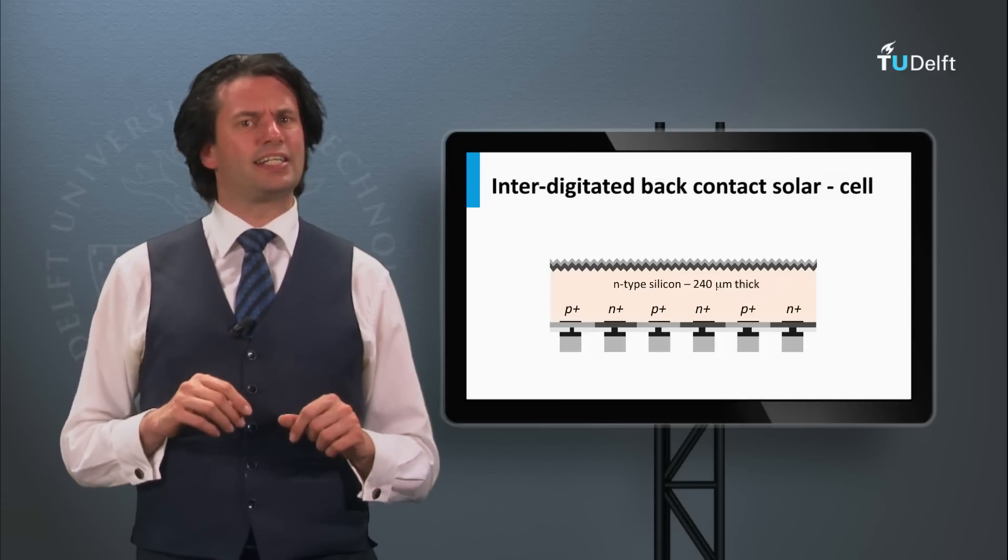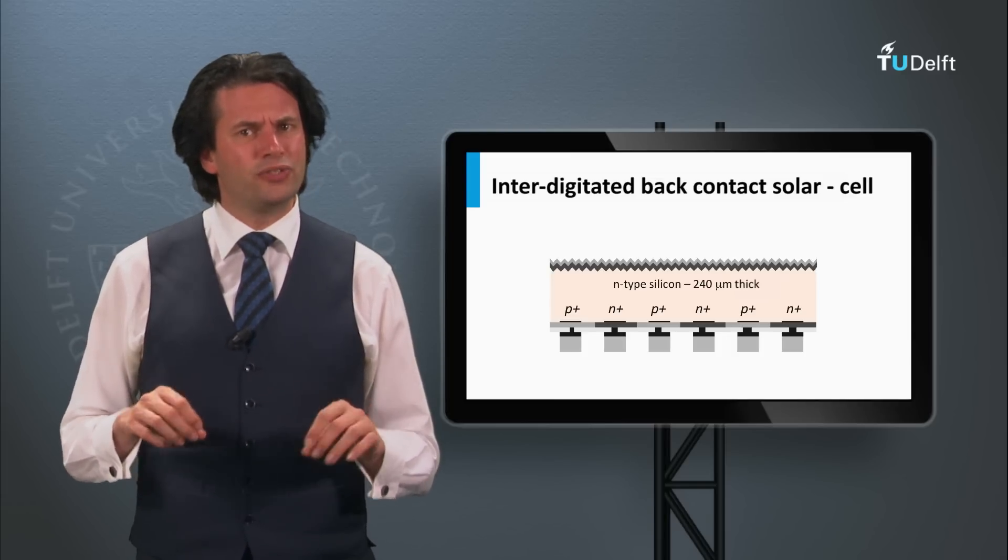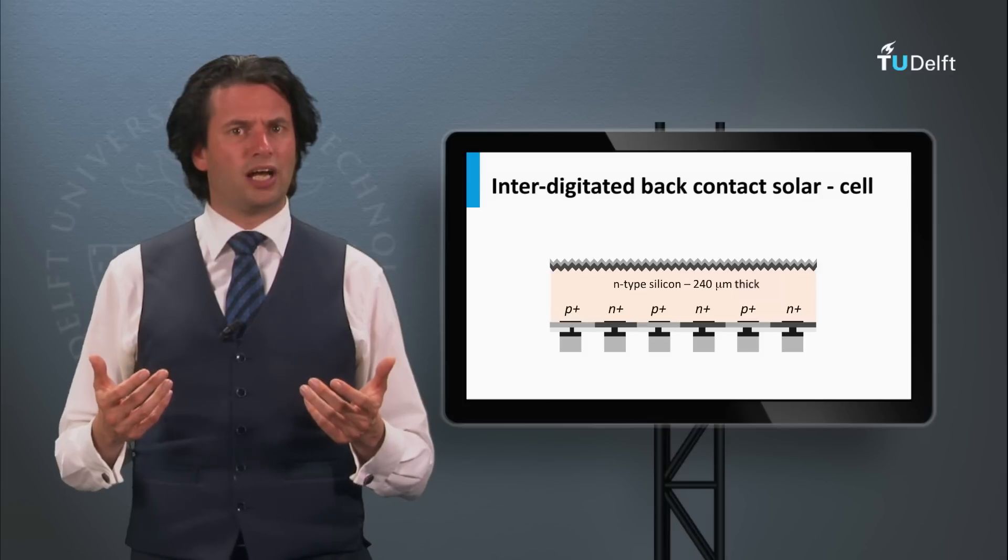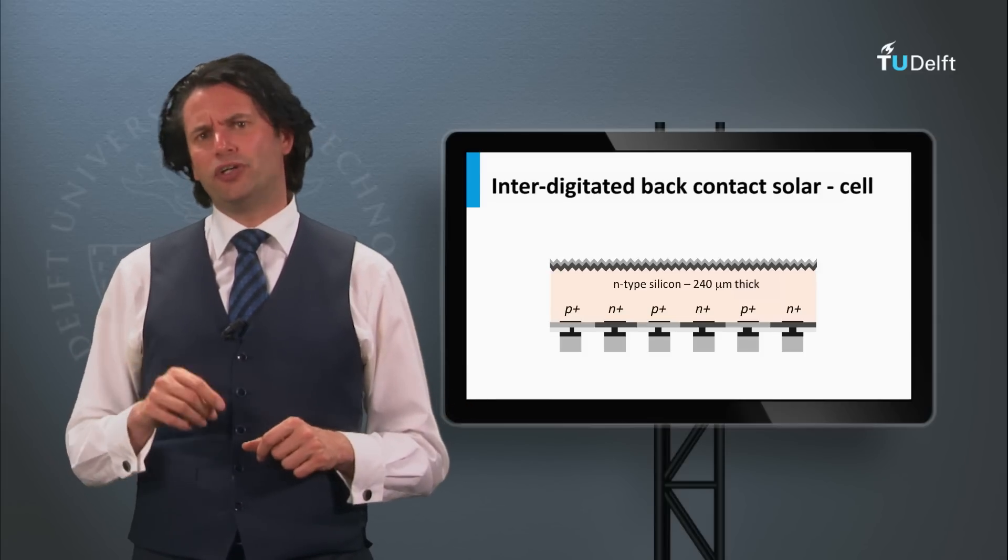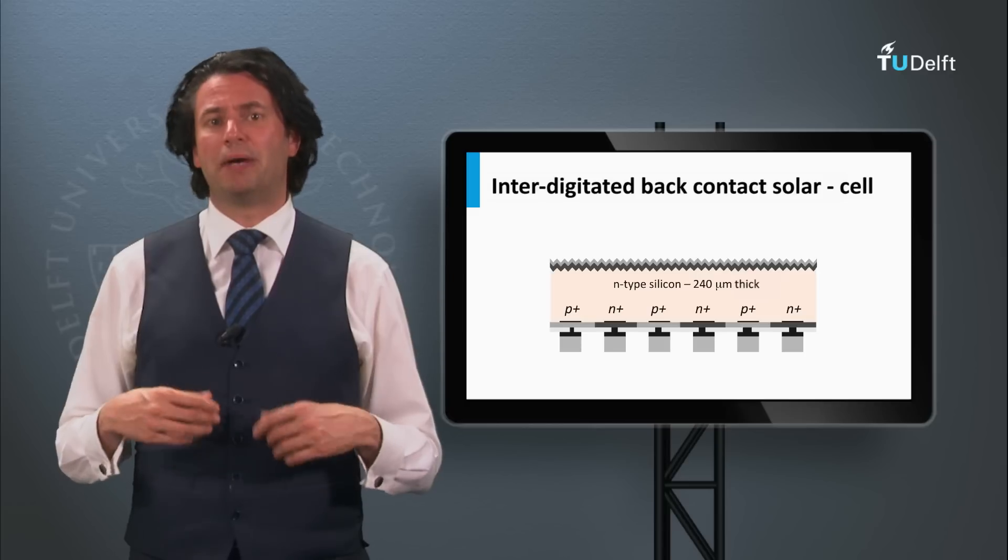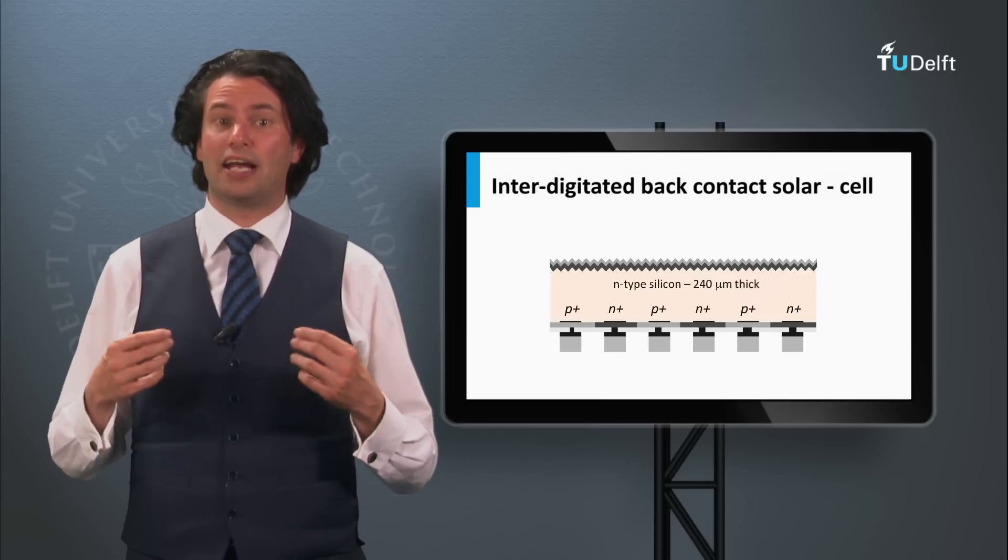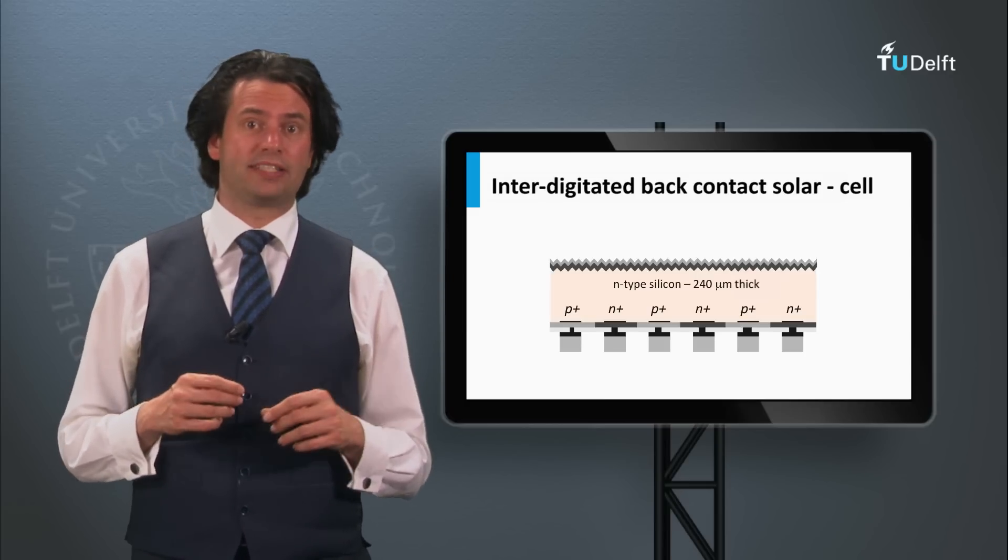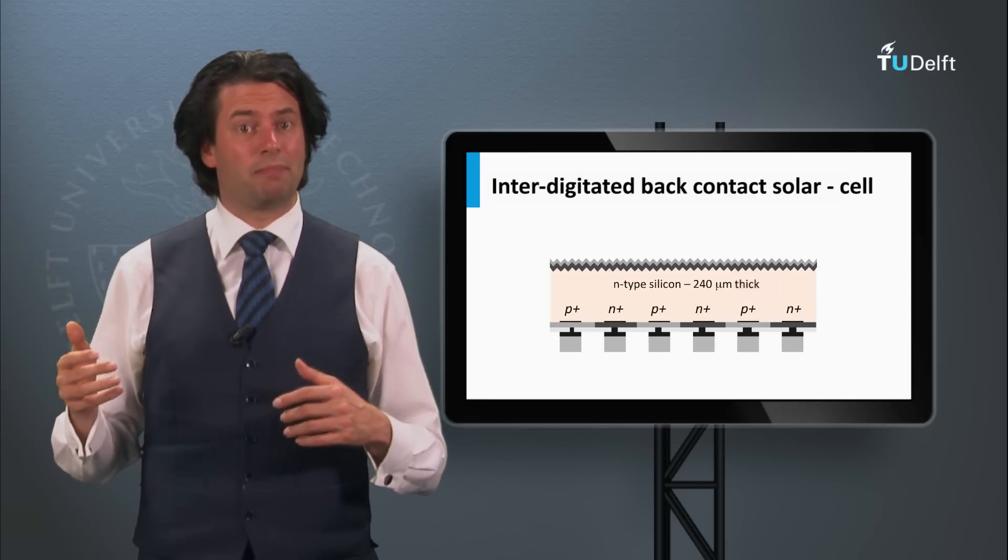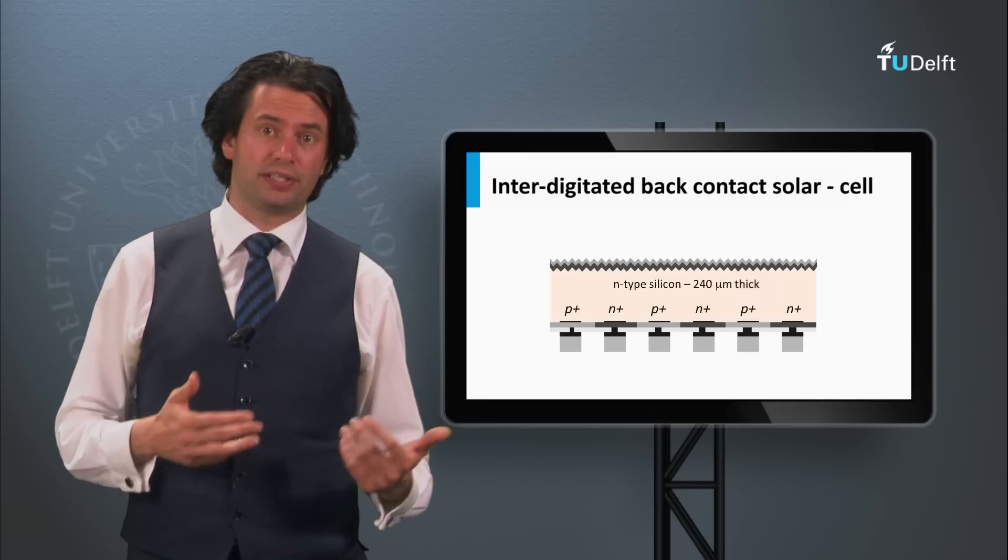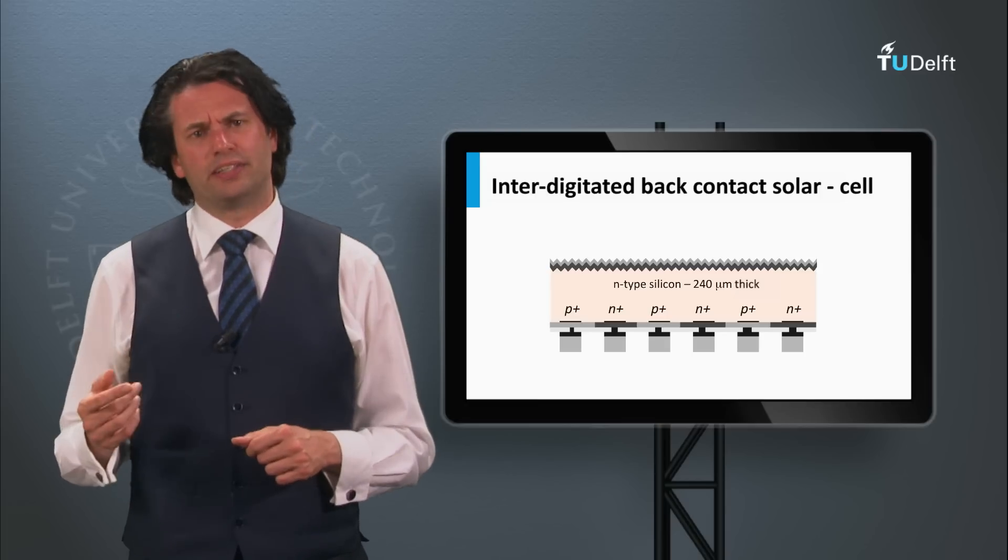This effect is not present in N-type wafers. The second advantage is that N-type silicon is not that sensitive for impurities like iron. As a result, less efforts have to be made to make high electronic quality N-type silicon, meaning that high-quality N-type silicon can be processed cheaper than P-type.